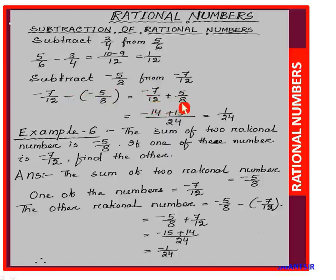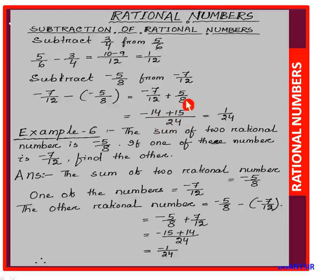LCM of 12 and 8 is 24. 24 divided by 12 equals 2; 2 into -7 equals -14. Then 24 divided by 8 equals 3; 3 into 5 equals 15. So -14 plus 15 equals 1, giving the answer 1/24.